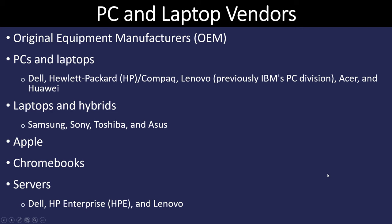When we talk about vendors, one phrase that comes up frequently is OEM — original equipment manufacturers. The popular ones include Dell, Hewlett-Packard, and Lenovo. For laptops, there's also Toshiba, Asus, and Apple has offerings in both categories. There's also something called a Chromebook, which runs Google's Chrome OS. For servers, we have Dell, HP, Lenovo, and several other manufacturers.